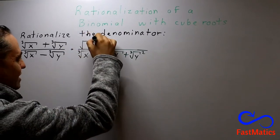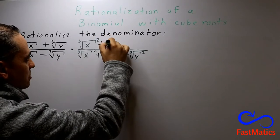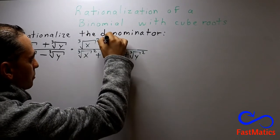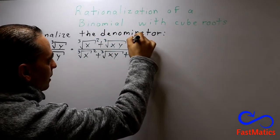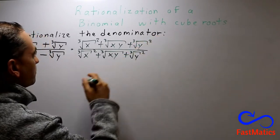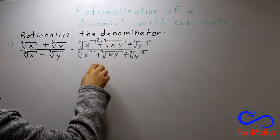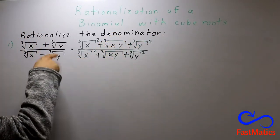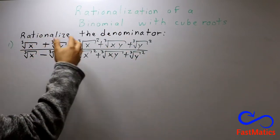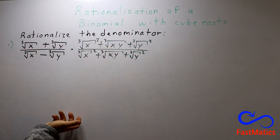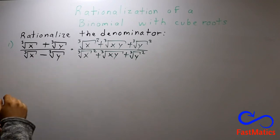But if you do that in the denominator, you have to do that in the numerator also. Because if you multiply one expression by the same thing over the same thing, it is like multiplying by one. And if you multiply something by one, you get the same expression or an equivalent expression.